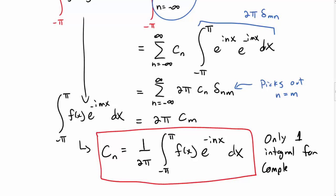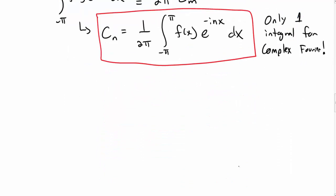Note again that there's really only one integral that we need to do for the complex Fourier series. Instead of, say, 3 in general for the real Fourier series, for the constant, the sines, and the cosines.